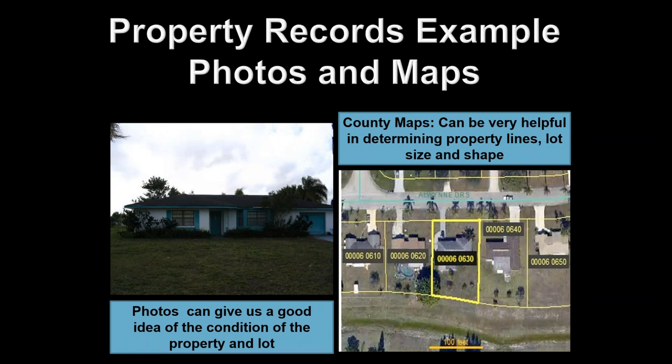Some property records will give us additional information like photos, and most will now have some type of map search tool. These map search tools are incredibly valuable for researching property lines and seeing where the property is located relative to others in the area. If there are additional links to click for more information in the county records, you want to take the time to review that information — it's going to give you valuable input for making a decision.